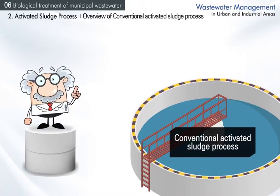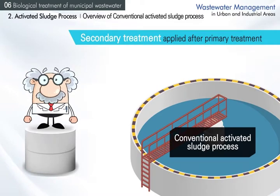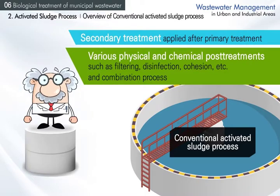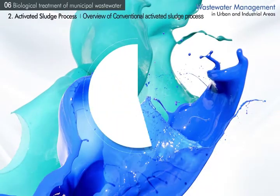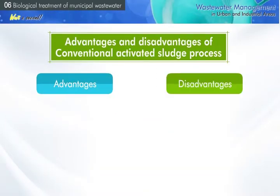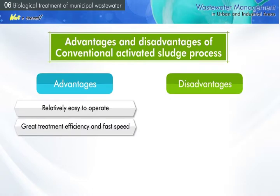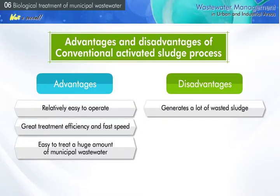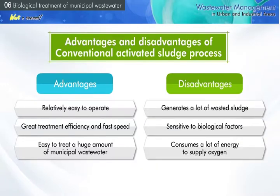Conventional activated sludge process is the secondary treatment applied after preliminary and primary treatment. It is combined with chemical and physical post-processes including filtering, disinfection, and cohesion. Its advantages are that it is relatively easy to operate, has good treatment efficiency and fast speed, and is easy to apply for large amounts of municipal wastewater. However, it generates a lot of wasted sludge, is sensitive to biological factors, and consumes a lot of energy to supply oxygen.